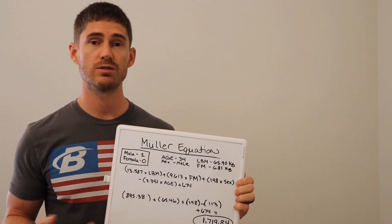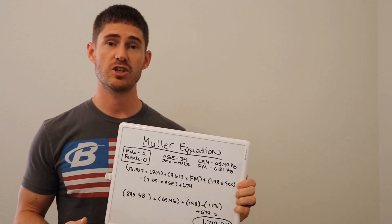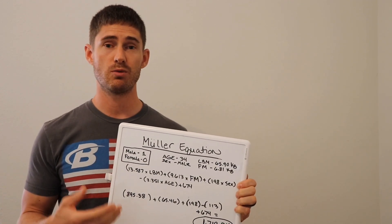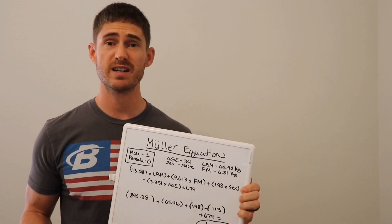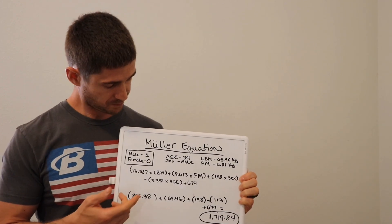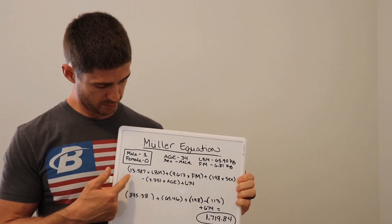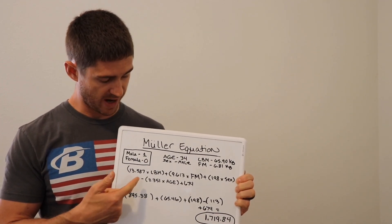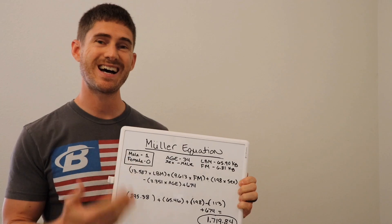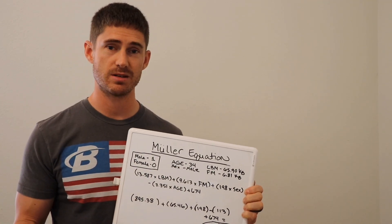So I just want to walk through a little bit about the equation and what you can kind of expect at the end. The equation starts with 13.587 times your lean body mass.